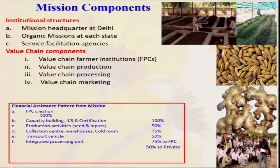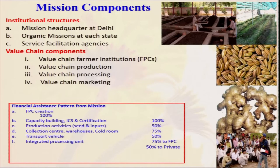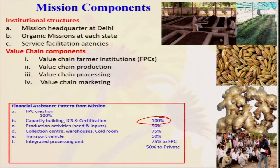Looking at the mission component and institutional structure — the mission headquarters is situated in Delhi, and this organic mission exists in each of the northeastern states: Meghalaya, Sikkim, Tripura, Arunachal Pradesh, Nagaland. They have service facilitation agencies. The value chain components cover value chain production, value chain processing, and value chain marketing. For capacity building, training, and certification, the government is giving 100 percent assistance — farmers do not have to spend a single rupee from their own pocket. Government is also giving 50 percent subsidy for transport vehicles and 75 percent for processing units to farmer producer companies and 50 percent to private entities.